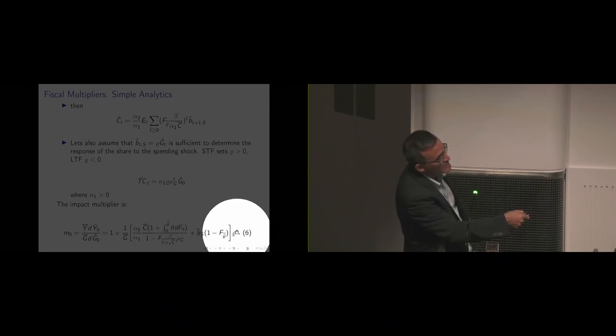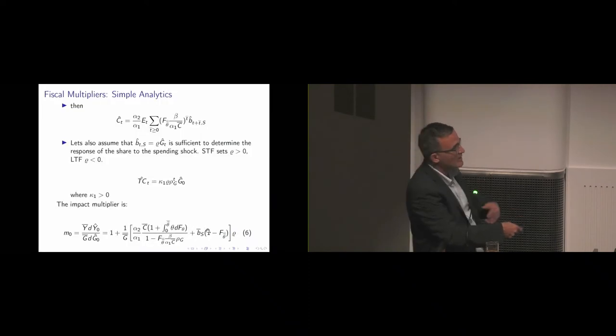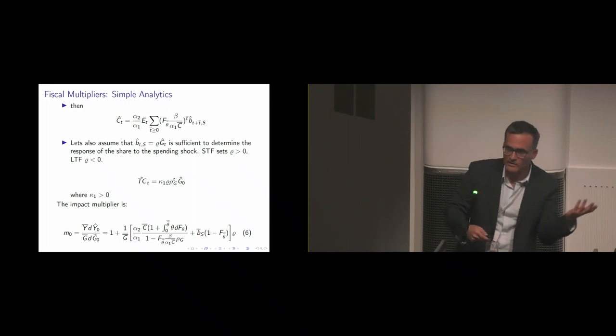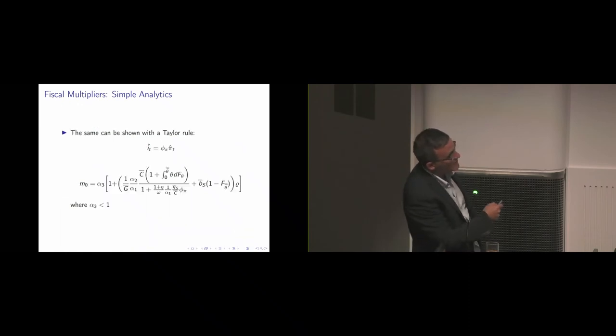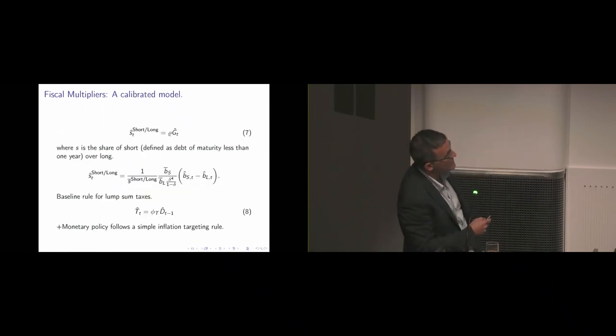So if you're financing short, this means that this coefficient here is positive. If you're financing long, it's negative and then the multiplier can be greater than or less than one. If you're financing short, the multiplier is above one. If you're financing long, the multiplier is below one. The same works when you have a Taylor rule. Next, we calibrate this model.